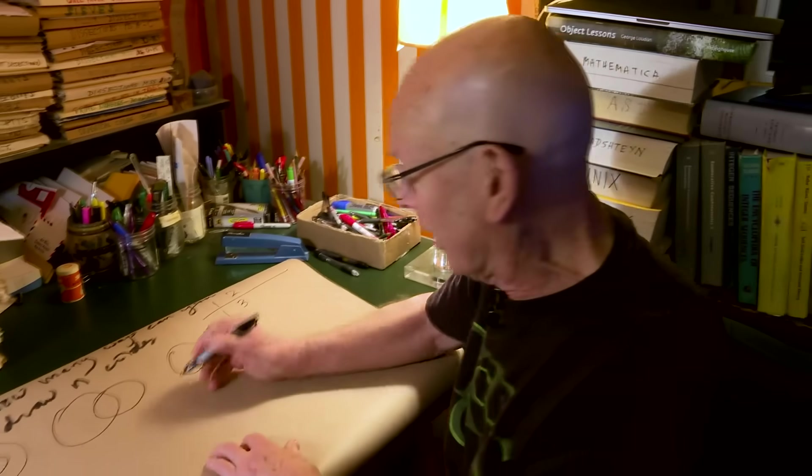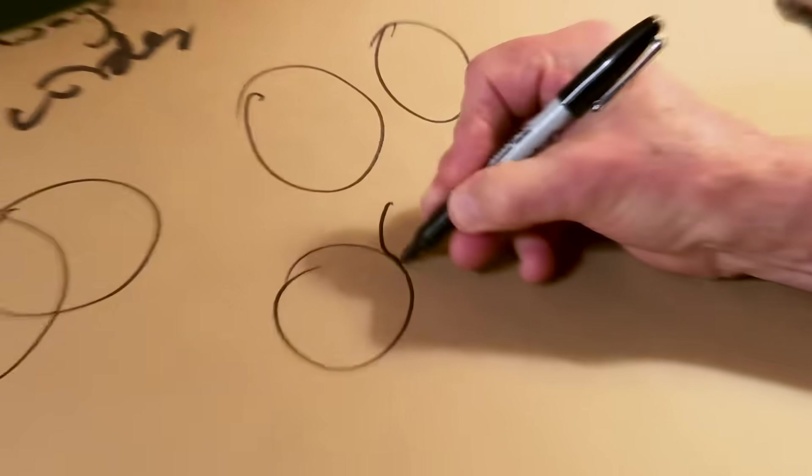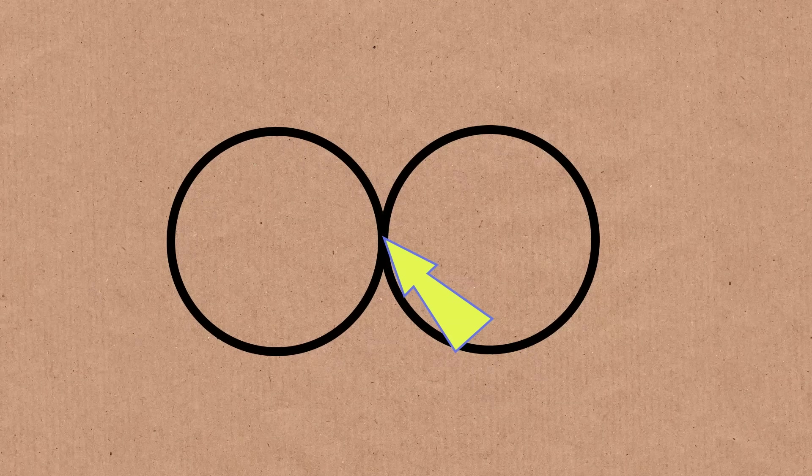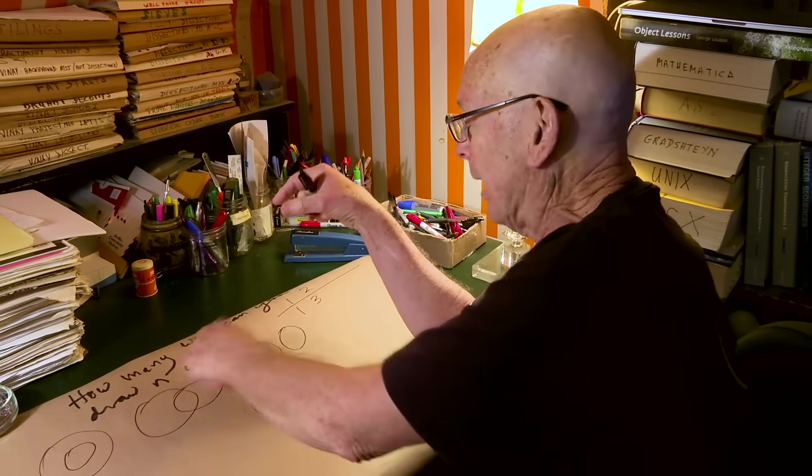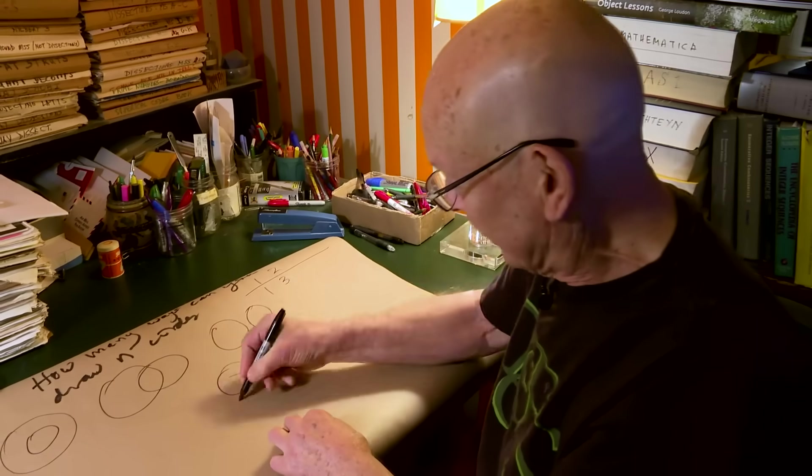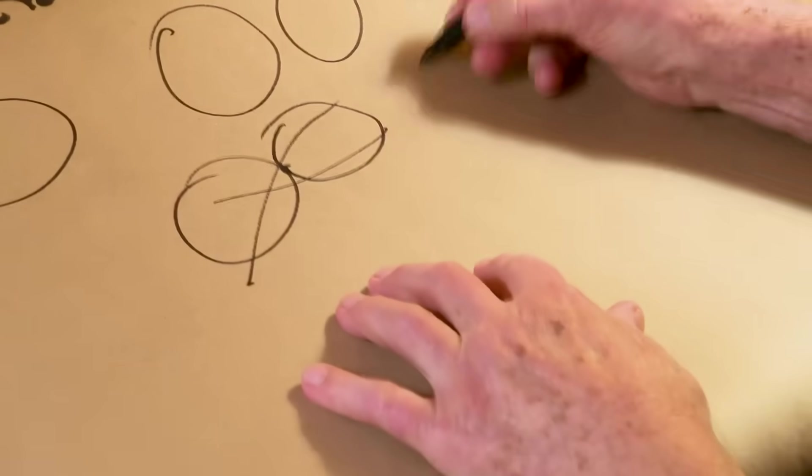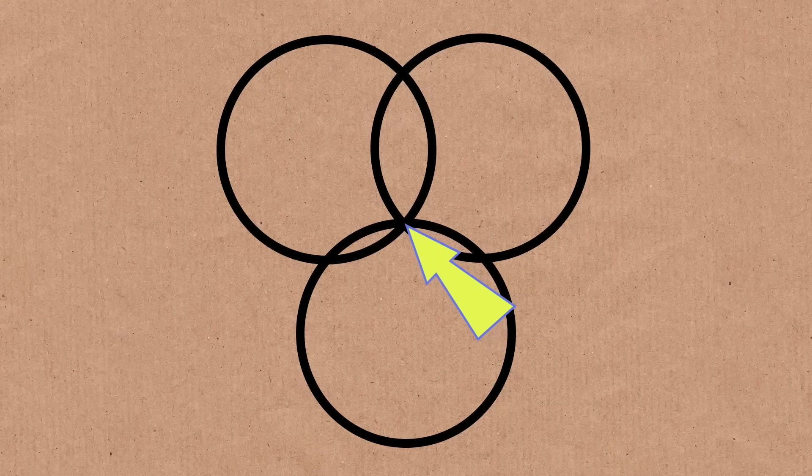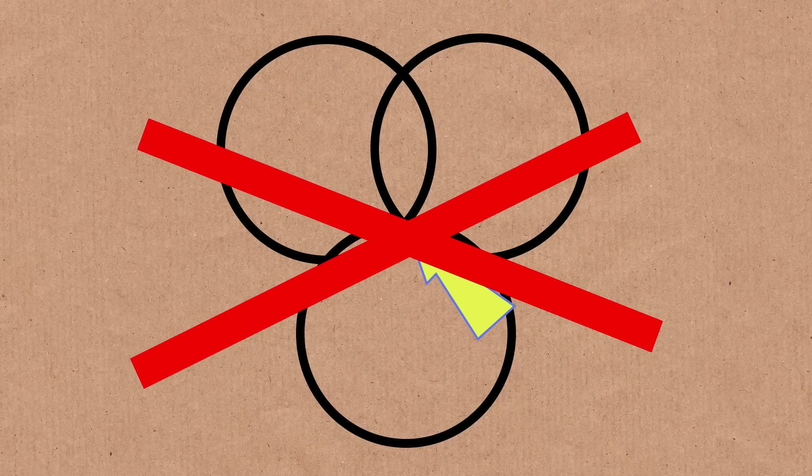And I better tell you what the rules are. We don't allow this kind of thing. We don't allow two circles to just kiss. They've got to make up their mind. They've got to overlap, or they've got to be separate. No, that's not allowed. And when we get to more circles, you're not allowed to have three going through a point. That's not allowed either.